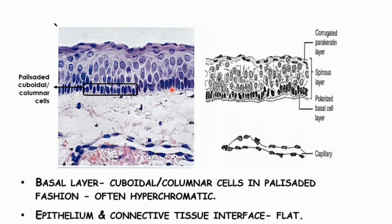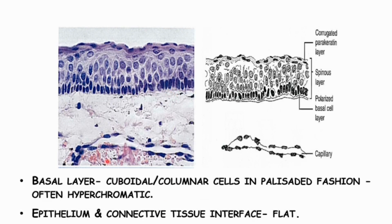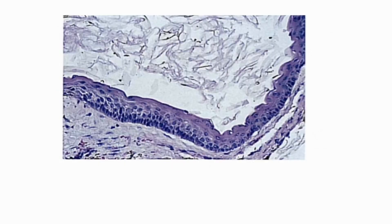The epithelium and connective tissue interface is flat, so there is no rete ridge formation. This whole layer is difficult to enucleate from the bone in one piece, which is the reason for its recurrence.